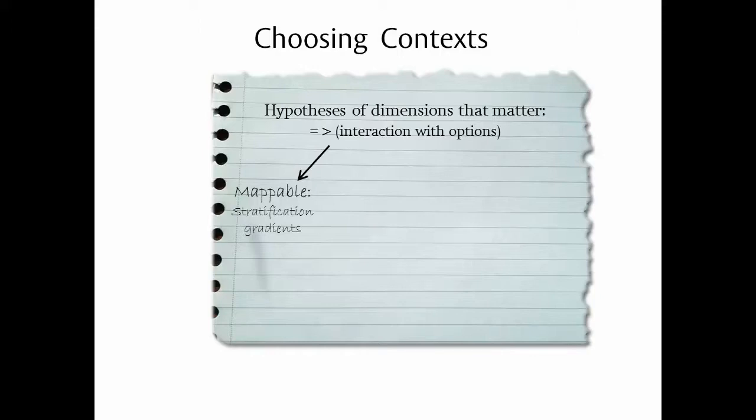Second, there are those which are predictable but not mappable. They're predictable in the sense we know their status before starting the study. An example would be if we're interested in the interaction of an option with the gender of the head of the household. This is something that can be determined before we start the study. But you can't point to a map and say what the gender of the head of the household will be. If we have these predictable contexts, then we can use stratified random sampling to select where we do the study. Or we might use purposeful sampling, where we deliberately select some of each type.